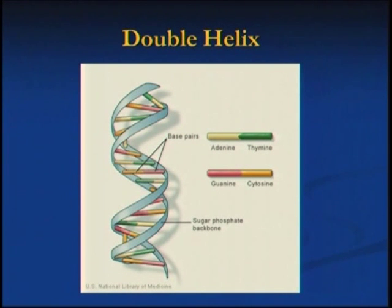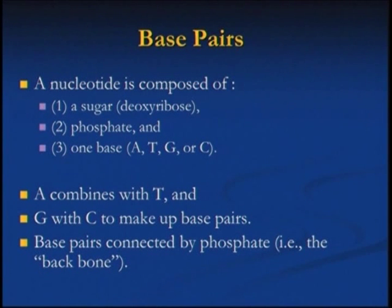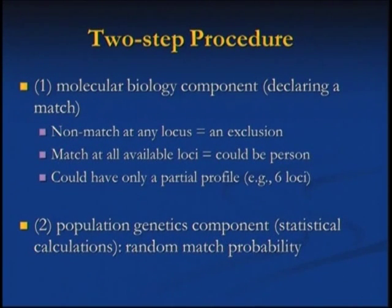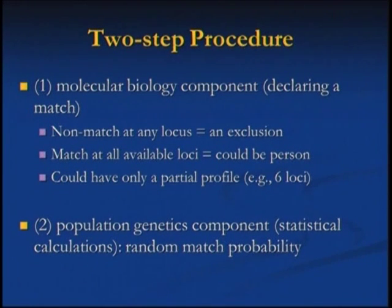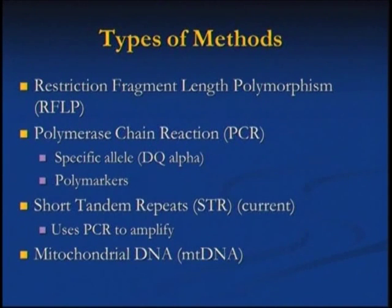You go to certain sites — for the national database, you go to 13 loci — and count the base pairs. It's really a two-step process: the molecular biology component of declaring a match is the first part. Once you have a match at each locus — and it must match at every locus — if you go to 13 loci and there's one where there's no match, it's an exclusion. It's much easier to exclude somebody than to include them. If there's an exclusion, you never get to the population genetics.